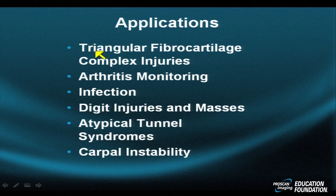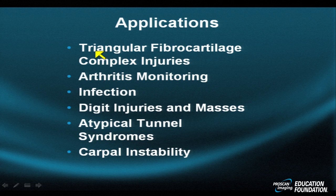One example would be inflammation of the extensor carpi ulnaris, which is common in young men. But in middle-aged adults and in athletes, perhaps the most common indication is to exclude injury to the triangular fibrocartilage complex, whose anatomy we'll review in detail. It's not just a disc-like structure — it's a complex with disc-like structure and complex attachments.